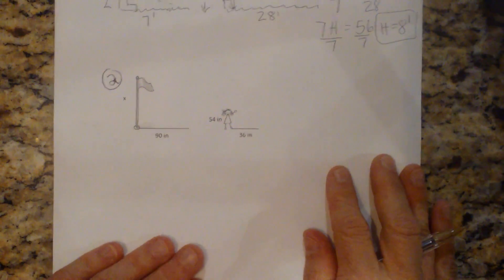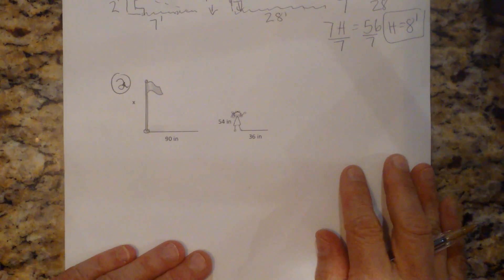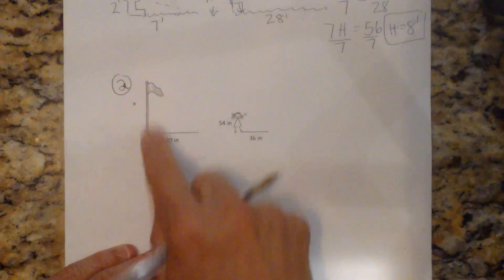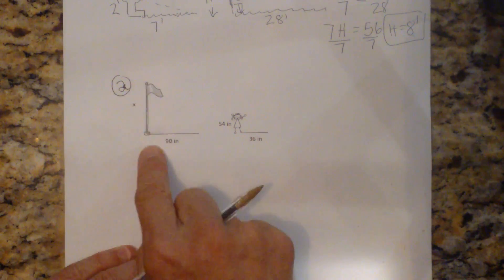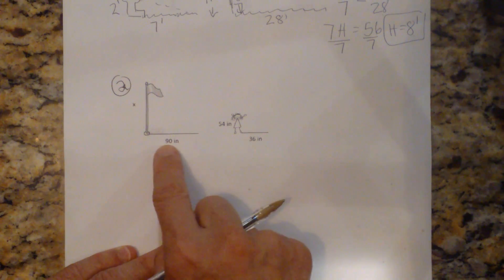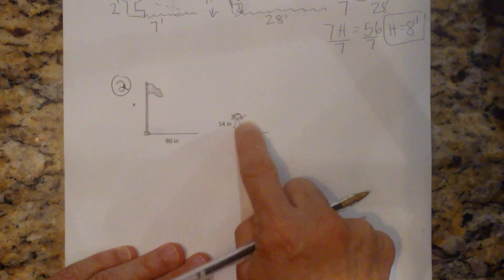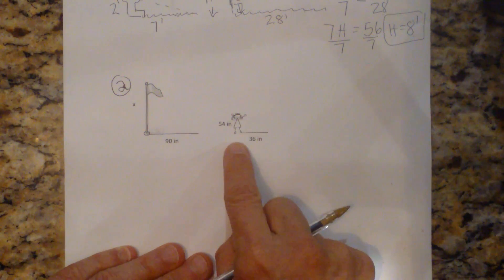Let's look at a second one. This one's just the diagram. So the hardest part's been done, which is setting it up. So we have a flagpole that has a shadow that's 90 inches. And we have a child that's 54 inches. And her shadow is 36 inches.